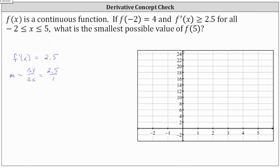So let's go ahead and plot that point on the coordinate plane — negative 2 comma 4 is here. The important thing to recognize is: if we assume that f prime of x equals 2.5 over this entire closed interval, not only is this the slope of the tangent line, but the graph of f of x would also have to be a line with a slope of 2.5.